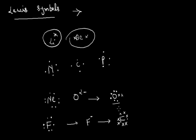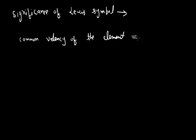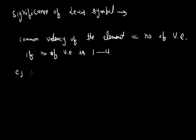Now we will discuss the significance of Lewis Symbols. The number of dots around the symbol gives the number of electrons present in the outer shell. This number of electrons helps to calculate the common valency of the element — that is why these electrons are called valence electrons. The common valence of the element is equal to the number of valence electrons if that number is 1 to 4.